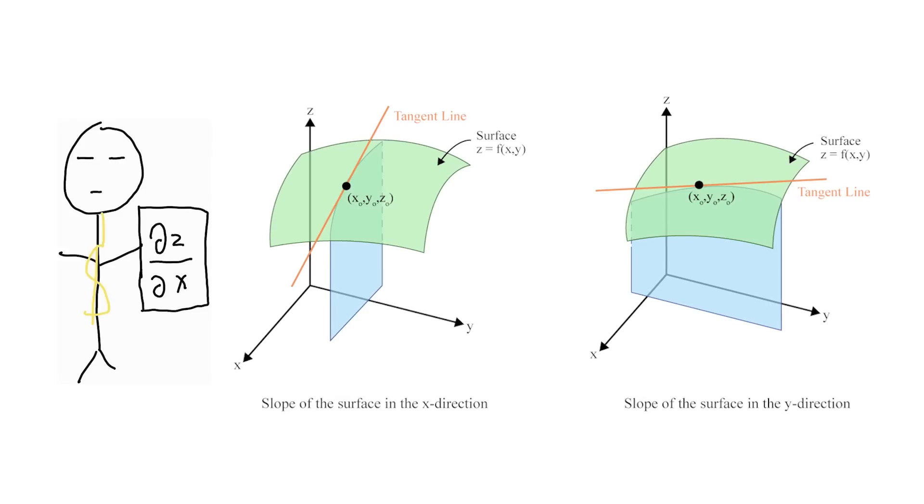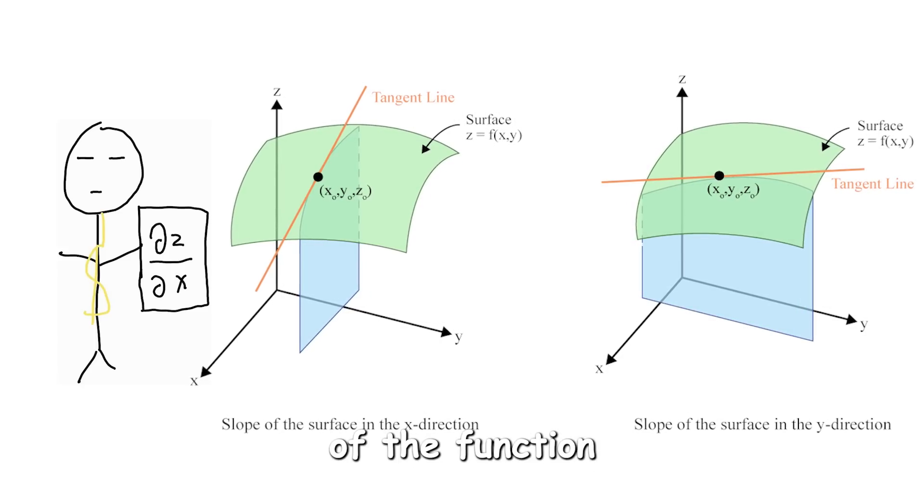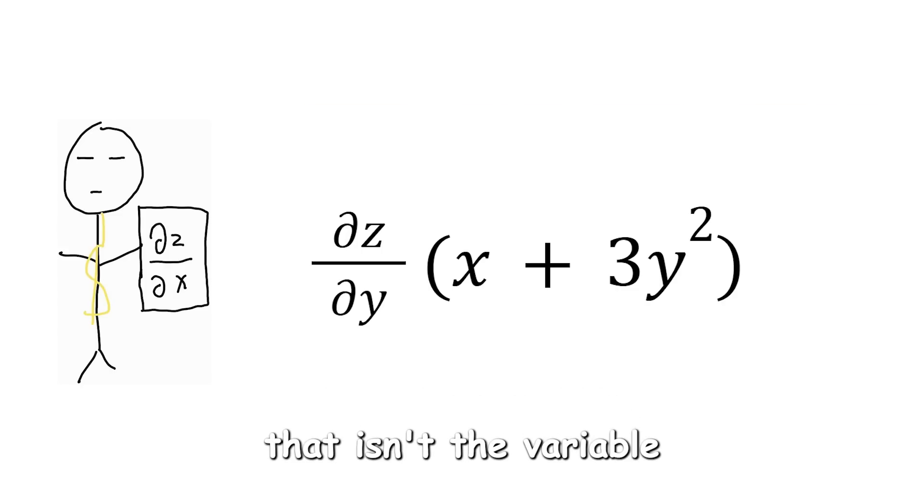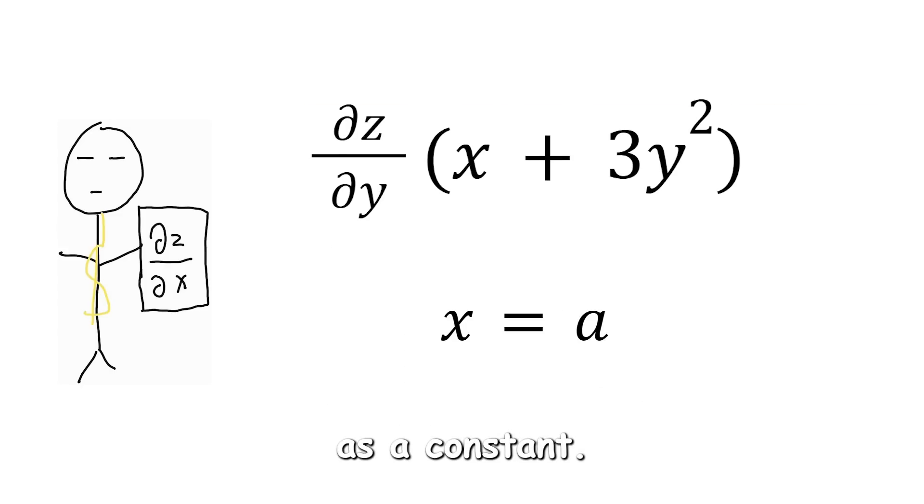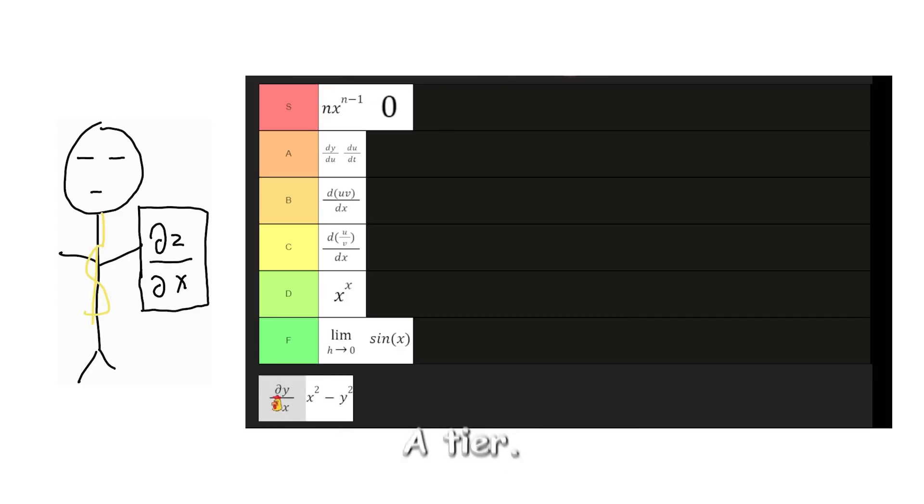Partial derivatives. Partial derivatives are used on multivariable functions when you want to find the rate of change of the function with respect to one of its variables. Partial derivatives take some practice because you have to treat anything that isn't the variable you're differentiating as a constant. On my exam, I made mistakes either differentiating other variables or removing the variables altogether. One way partial derivatives are used is vector fields. Once you get product, quotient, and chain rule down, partial derivatives aren't too bad and just require some practice, so I will give them the A tier.